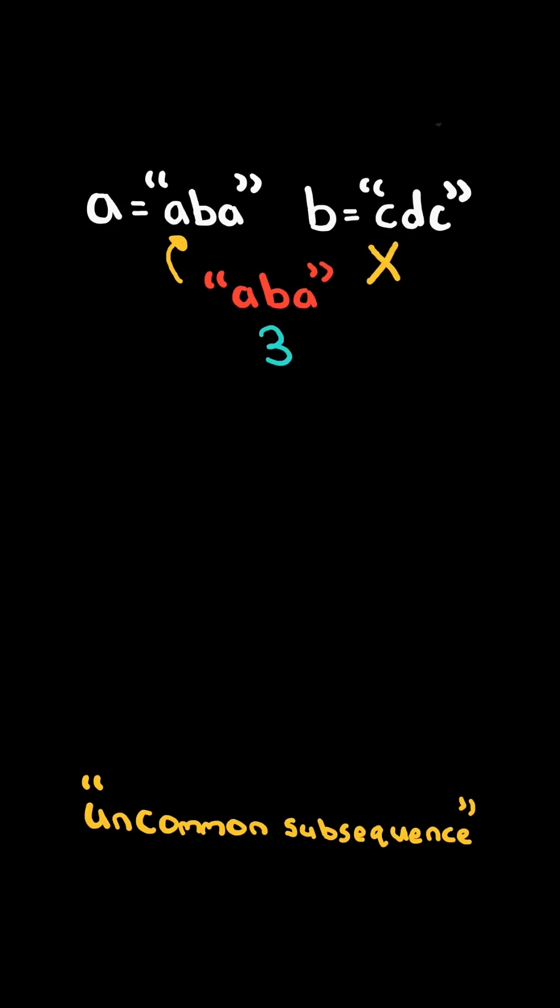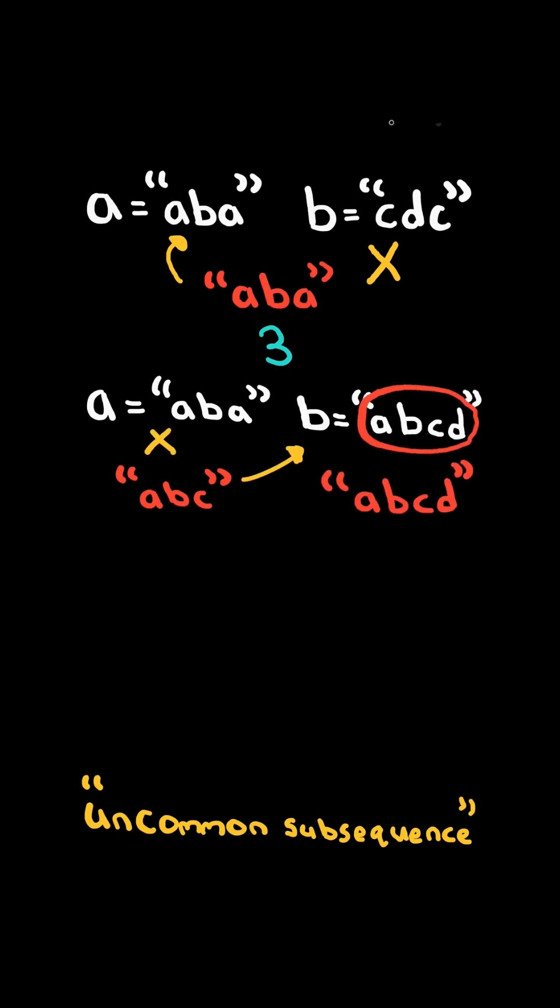Return the length of the longest uncommon subsequence. Consider this new example. ABC is an uncommon subsequence since it's a subsequence of B, but not a subsequence of A, but the longest uncommon subsequence is A, B, C, D. So we return 4.